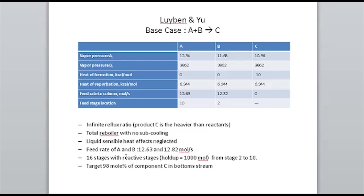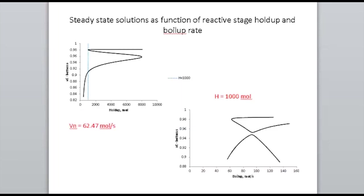The layout: constant liquid holdup assumed on each stage of 1000 moles, 16 stages with reaction confined to stages 2 to 10 — below that you just have additional stripping of your product. Looking at the solutions, this is the family of steady states at the conditions Loeben and Yen presented — a molar boil-up VN at the bottom of 62.47 moles per second. Allowing the holdup to change, at the 1000 mole holdup they presented we actually had three solutions.